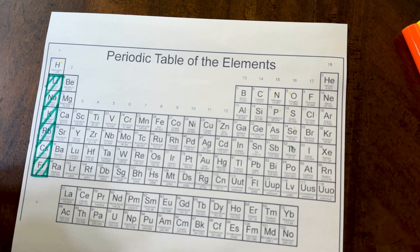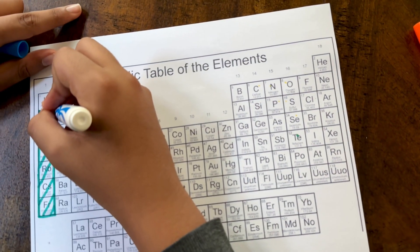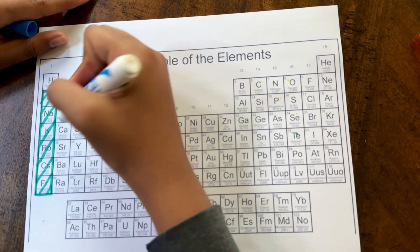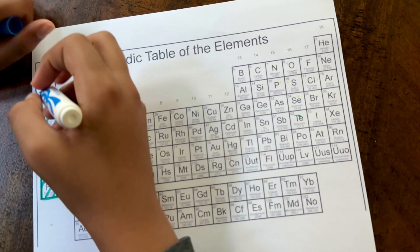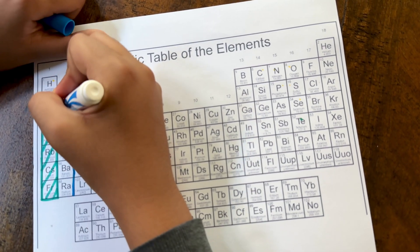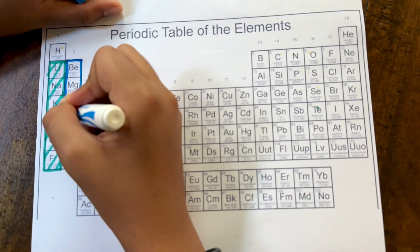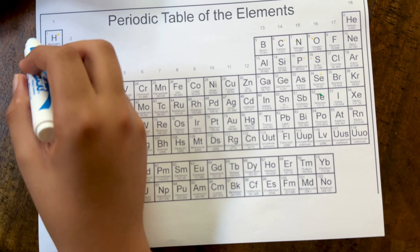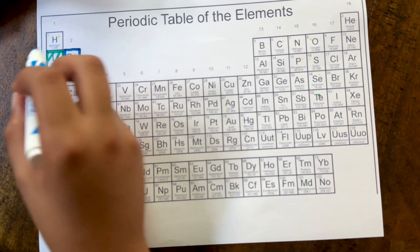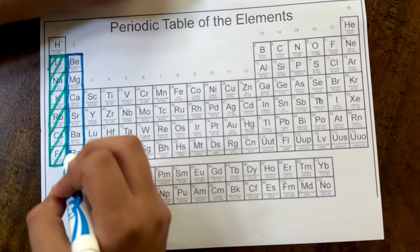Next are alkaline earth metals. They're also reactive but not as highly reactive. You might be wondering why hydrogen isn't colored in. That's because hydrogen is a gas, not a metal. It's actually a non-metal, and it's just put there because of the valence electrons. But in reality, it's somewhere over here in this non-metal section.